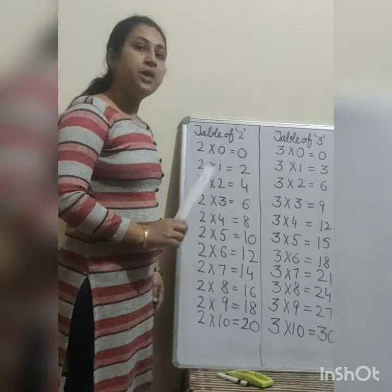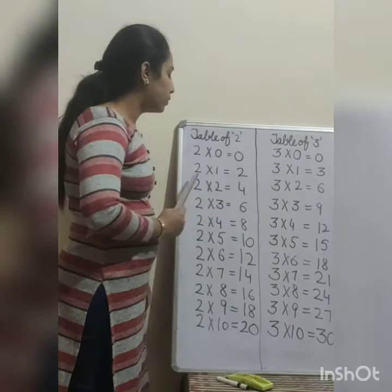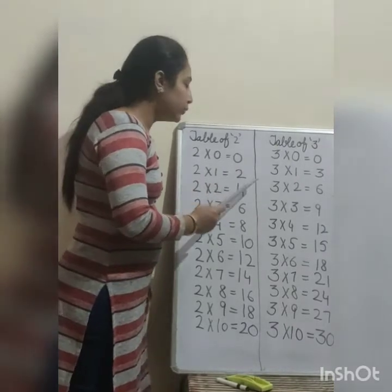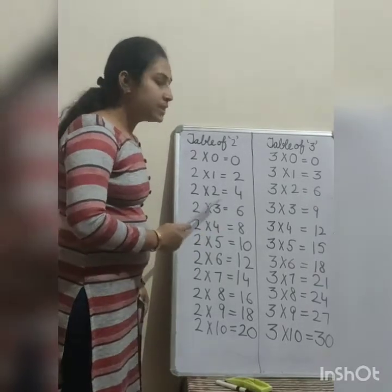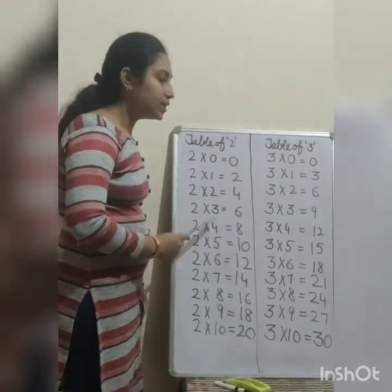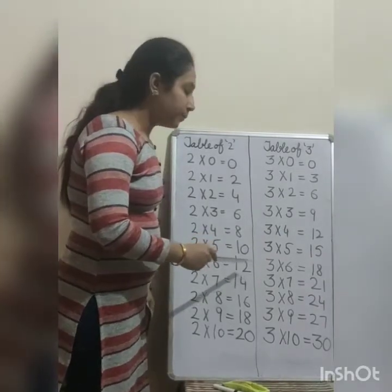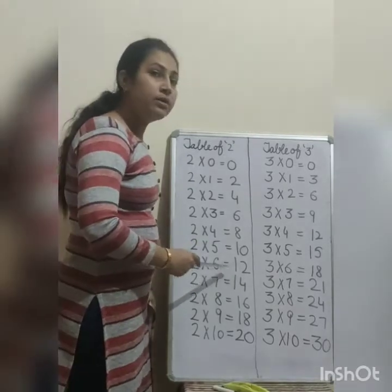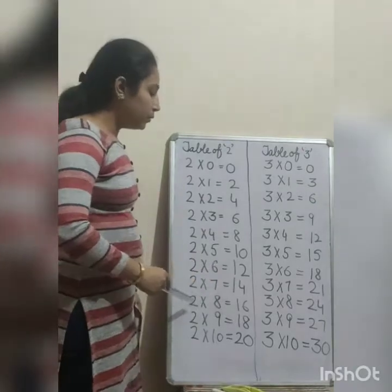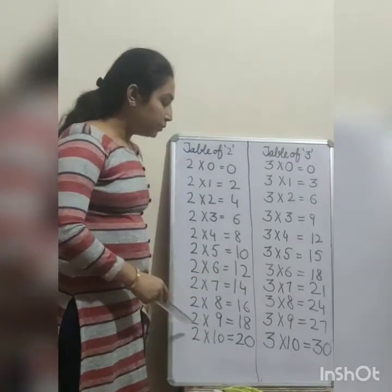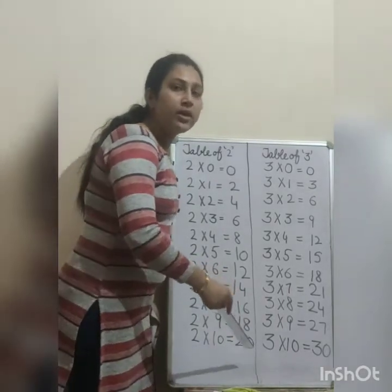Once again. Speak with me everybody. 2 zeros are 0, 2 ones are 2, 2 twos are 4, 2 threes are 6, 2 fours are 8, 2 fives are 10, 2 sixes are 12, 2 sevens are 14, 2 eights are 16, 2 nines are 18, 2 tens are 20.